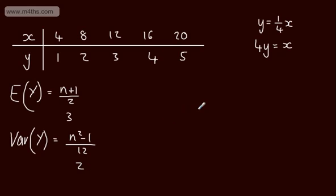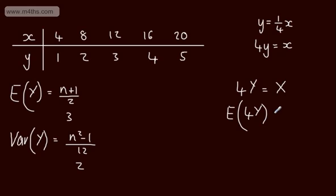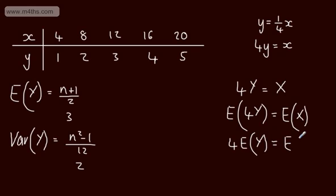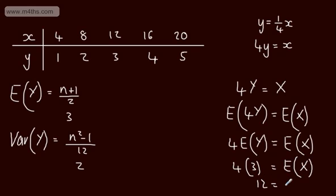Let's use this result to find the expected value of x. Since 4y equals x, we can say the expected value of 4y equals the expected value of x. Using the linear rules, that's 4 times E(y) equals E(x). So 4 lots of 3 equals 12, meaning the mean of the original data set is 12, which you can verify sits right down the middle of the values.